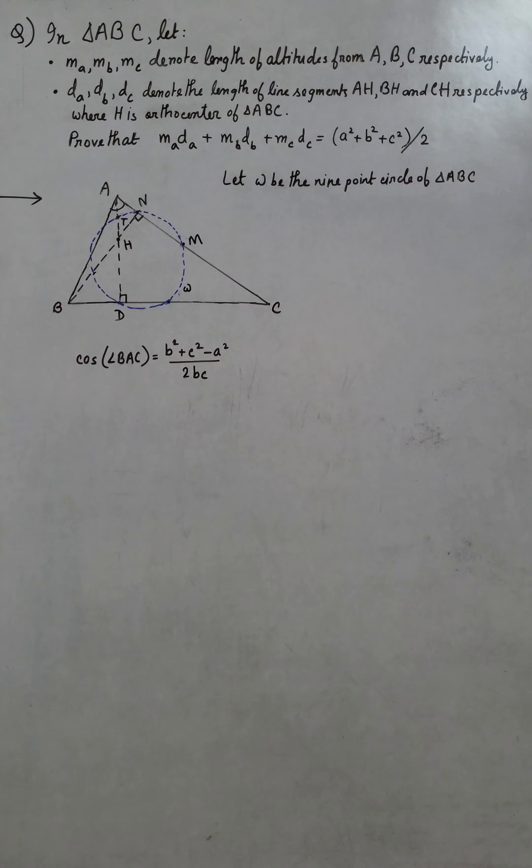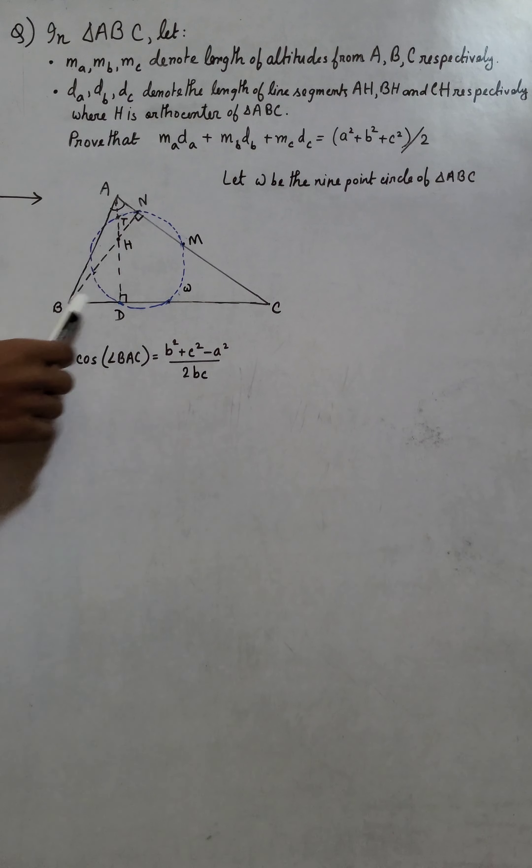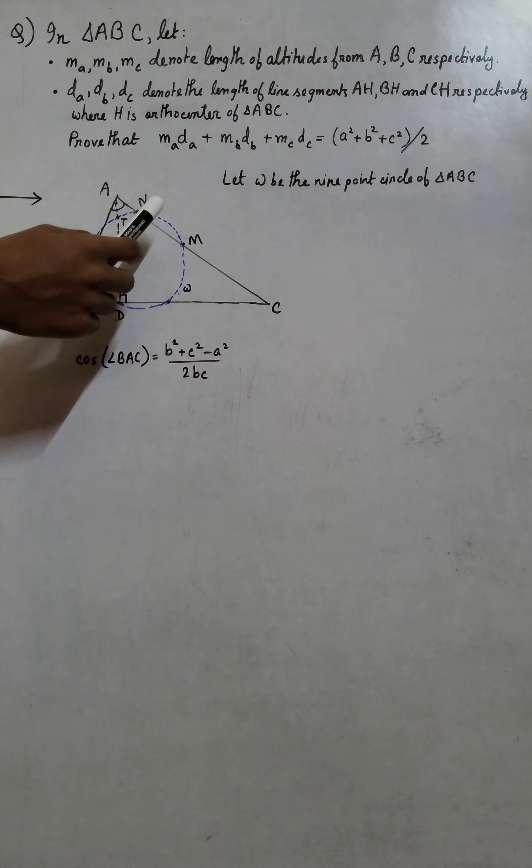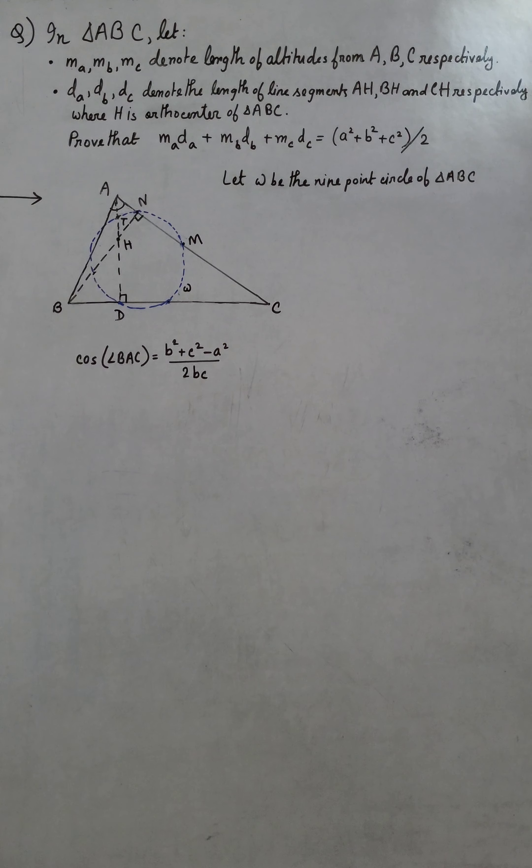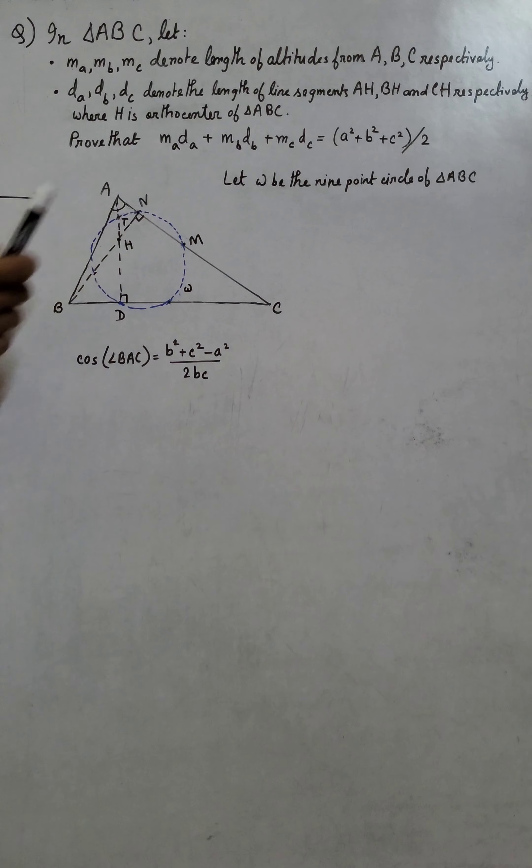Proceeding with the solution, we first let omega be the 9-point circle of triangle ABC. Let point D be the feet of altitude from vertex A onto side BC, and let N be the feet of altitude from vertex B to side AC. They intersect at the orthocenter H, and M is the midpoint of AC. We also define point T to be the midpoint of segment AH.